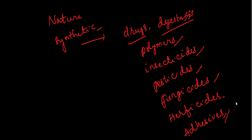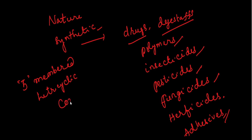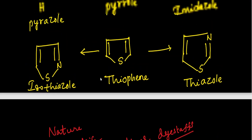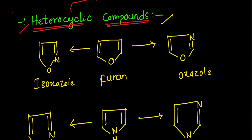In this video we are going to discuss about the five-membered heterocyclic compounds. These five-membered heterocyclic compounds may be considered as derivatives of pyrrole, furan, and thiophene. Here you can observe: this is the pyrrole, which is a five-membered ring.